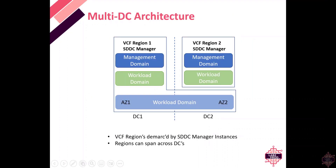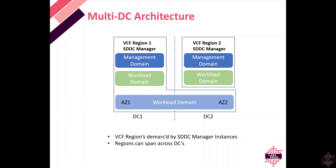The final diagram brings it all together: a multi-DC architecture encompassing VCF regions, availability zones, and workload domains. VCF Region One consists of an SDDC Manager, management domain, a workload domain, and a stretched workload domain with two availability zones. VCF Region Two is within DC Two — essentially the same thing minus the stretched workload domain. This illustrates how regions can exist in different locations without being part of the same SDDC instance.